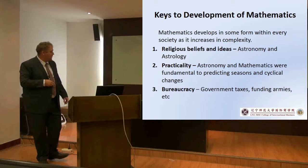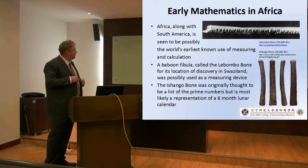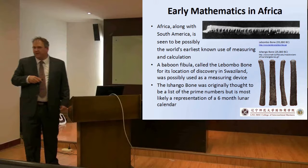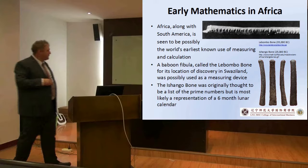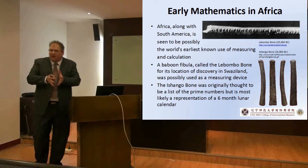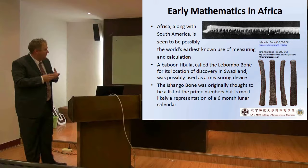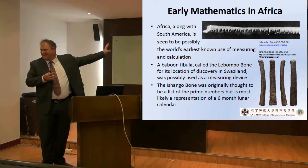Let me give a couple early examples of mathematics people don't know about. There are two African artifacts: the Lebombo and Ishango bones. One of the earliest known uses of mensuration and calculation, extremely old — 35,000 BC and 25,000 BC. The Lebombo bone was discovered in Swaziland, probably used as a measuring device. The Ishango bone is thought to have been a six-month lunar calendar. Clearly, even in those remote cultures, calendars were important.